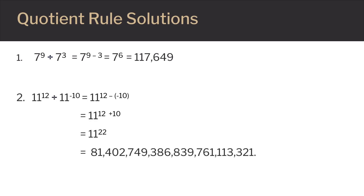The second example is a little tricky. We have 11 to the twelfth power over 11 to the negative tenth power. Watch out when you subtract here — the new power is 12 minus a negative 10. Remember that subtracting a negative number is the same as adding, so the exponent becomes 12 plus 10, which is 22. Our result is 11 to the 22nd power. If you put that in your calculator, you get a very, very big number. You can see why we use exponents — they're a lot more convenient than writing out giant numbers like this one.